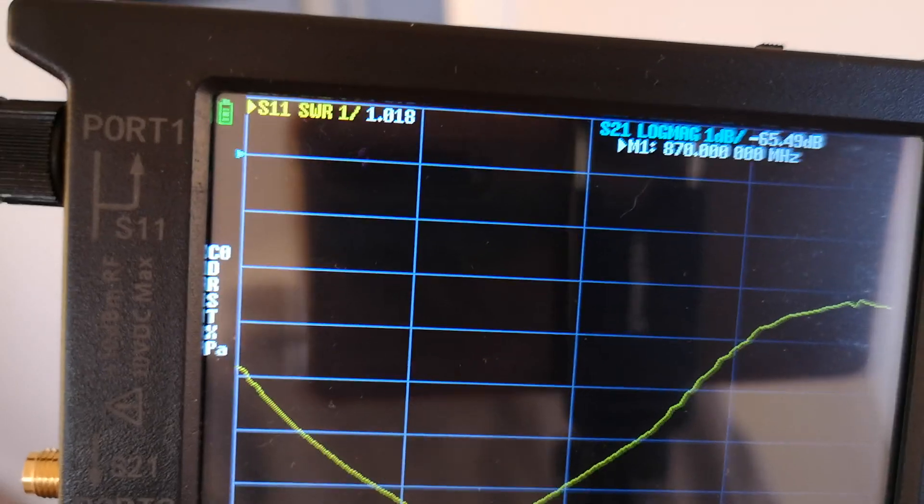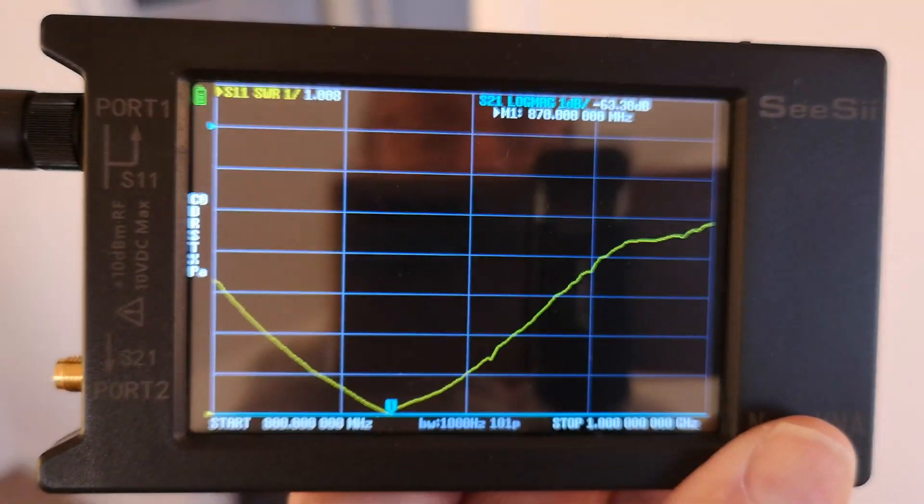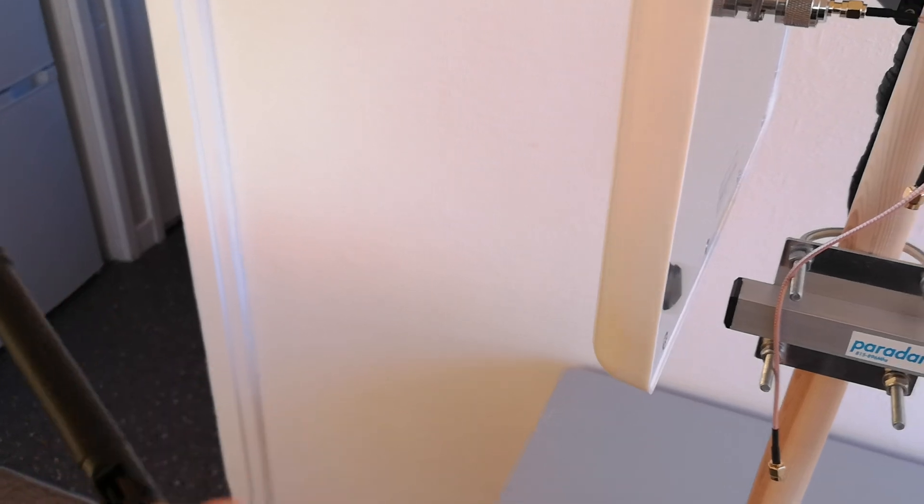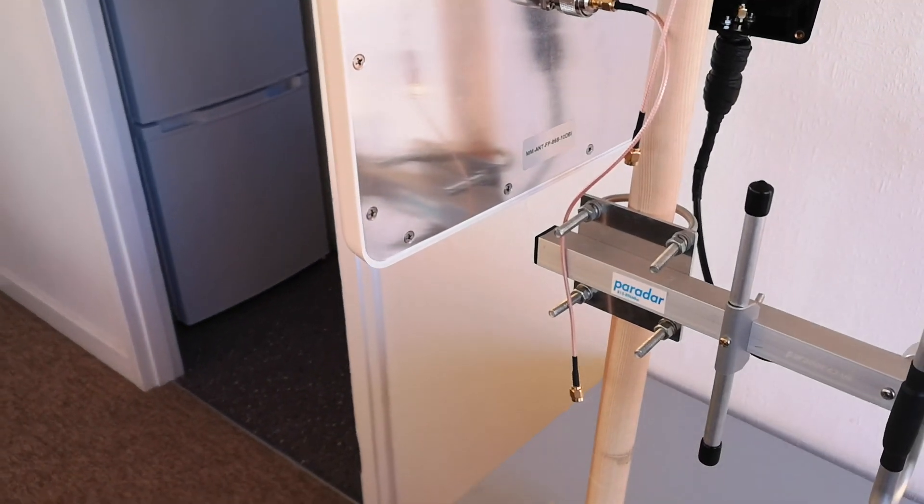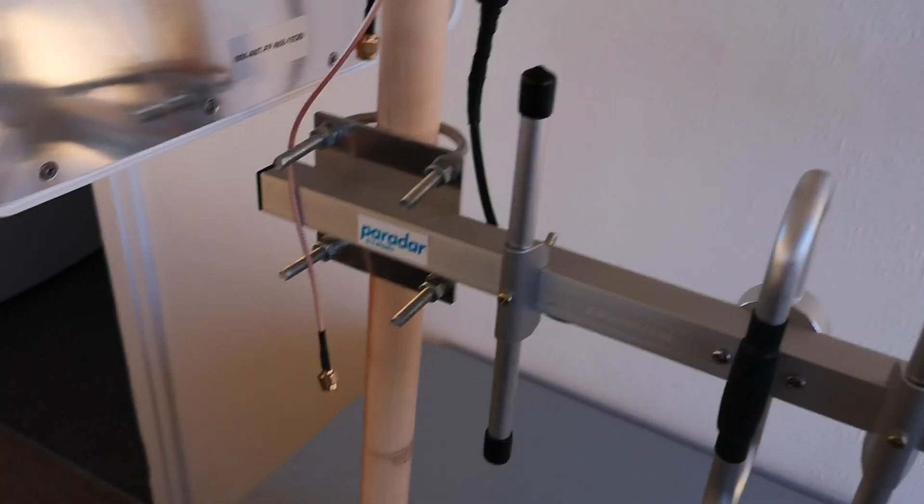And the SWR is 1.01 or 1.02, so I think that's fairly optimal. I think I did a good job of that. So what I'm going to do now is measure the SWR of these two antennas here, just to prove that the analyzer works and that it agrees with an antenna that's optimized.